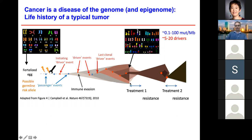When cancer is diagnosed, the cells are highly rearranged with many mutations — between 0.1 to 100 mutations per megabase of the genome — and could have thousands of structural variations, but only roughly a handful are actual drivers that gave fitness advantage to the cells. The last clonal driver means all cancer cells are descendants of that cell and contain all driver and passenger events going back to the fertilized egg. There are also subclonal drivers.